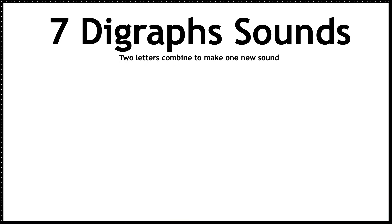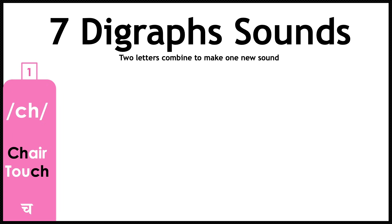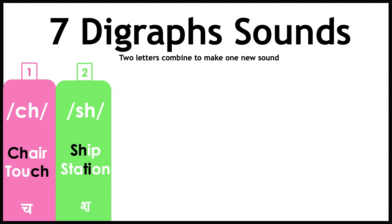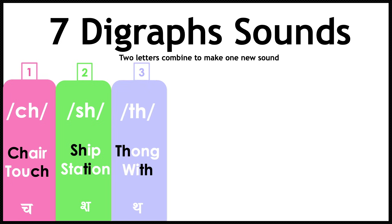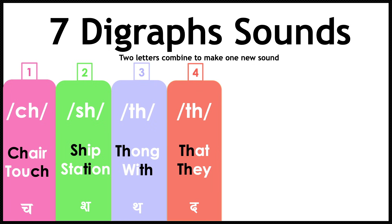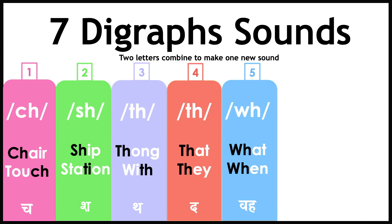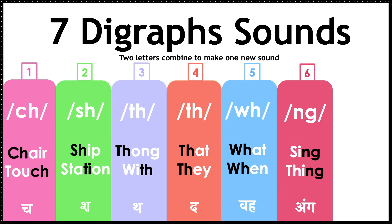Now let's look at the seven digraph sounds. Digraphs are two letters combined to make one new sound: /tʃ/ — chair, touch; /ʃ/ — ship, station; /θ/ or /ð/ — thin, with, the, that, they; /w/ — what, when; /ŋ/ — sing, thing; /ʒ/ — vision, azure.